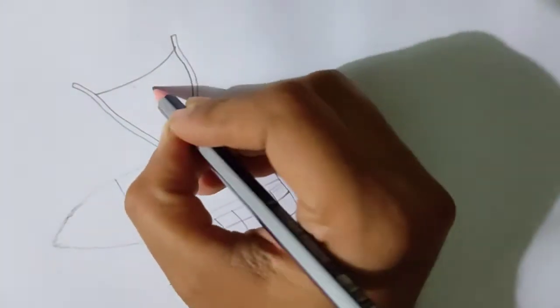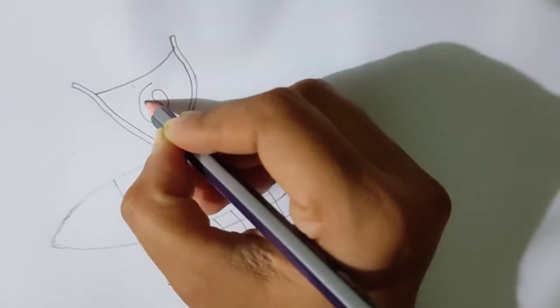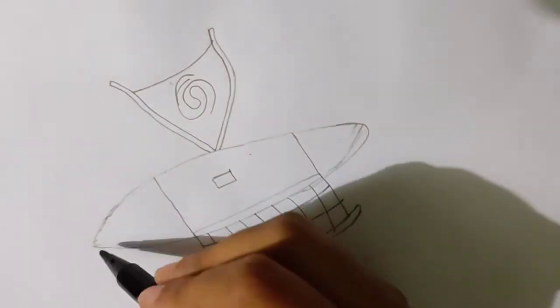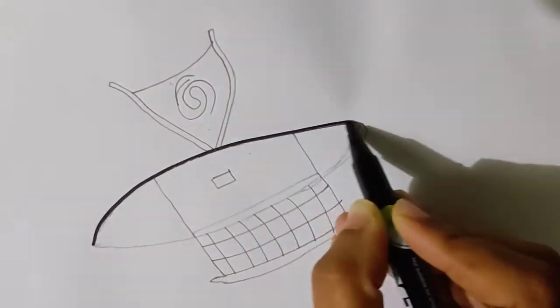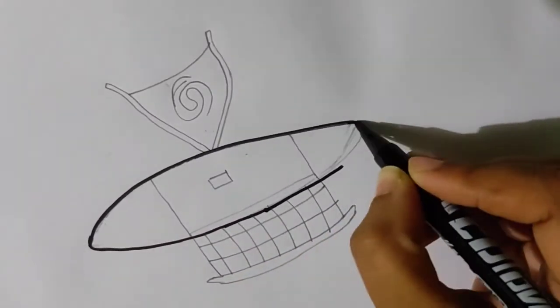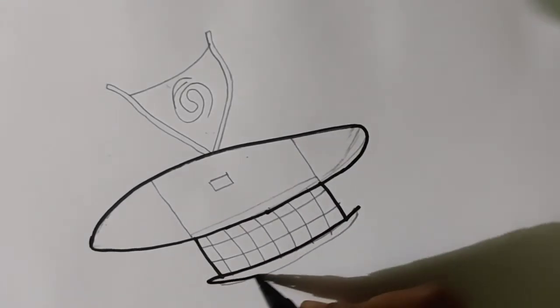So we are going to listen to a story or the information about Moana's boat while I am showing how to draw the Moana's boat. So let's get started. Okay, Moana's boat is one of the boats that Moana's ancestors sealed away.